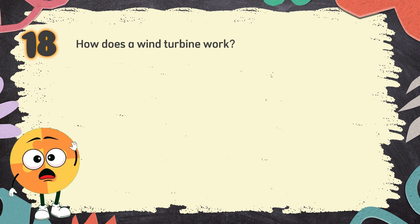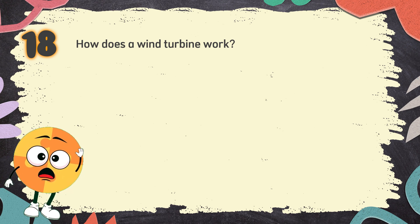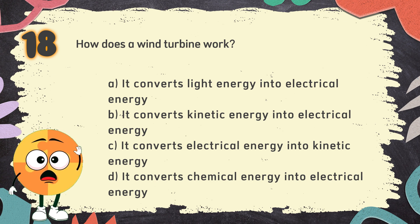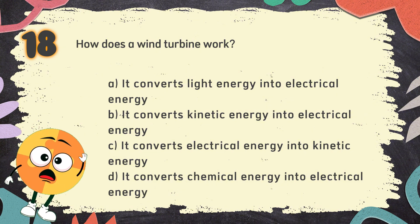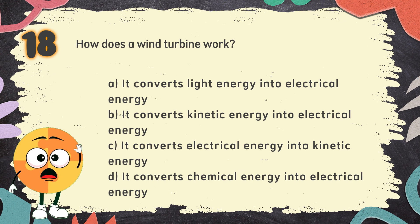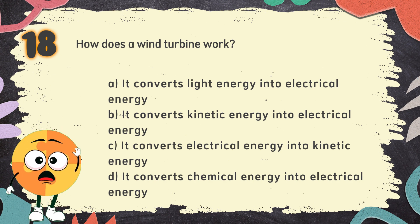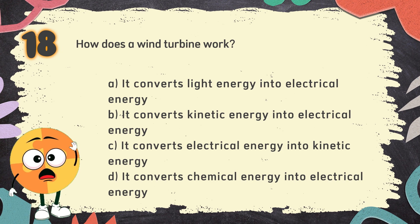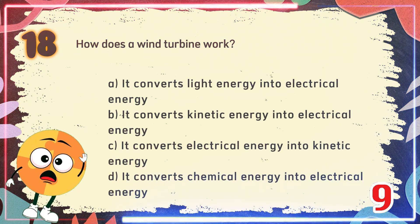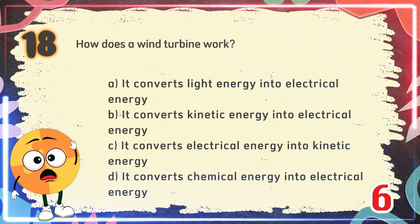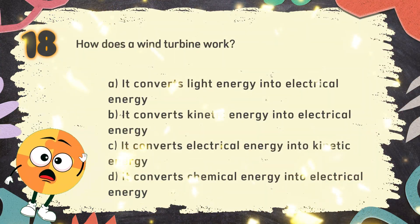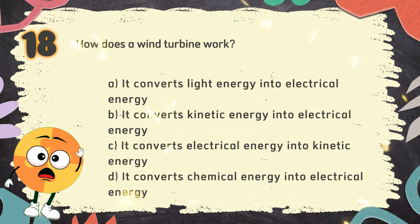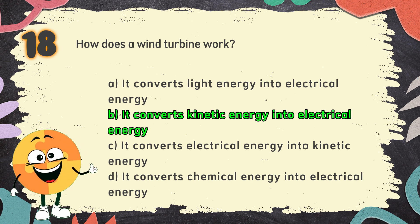Number 18. How does a wind turbine work? The choices are: A. It converts light energy into electrical energy, B. It converts kinetic energy into electrical energy, C. It converts electrical energy into kinetic energy, D. It converts chemical energy into electrical energy. The correct answer is B. It converts kinetic energy into electrical energy.